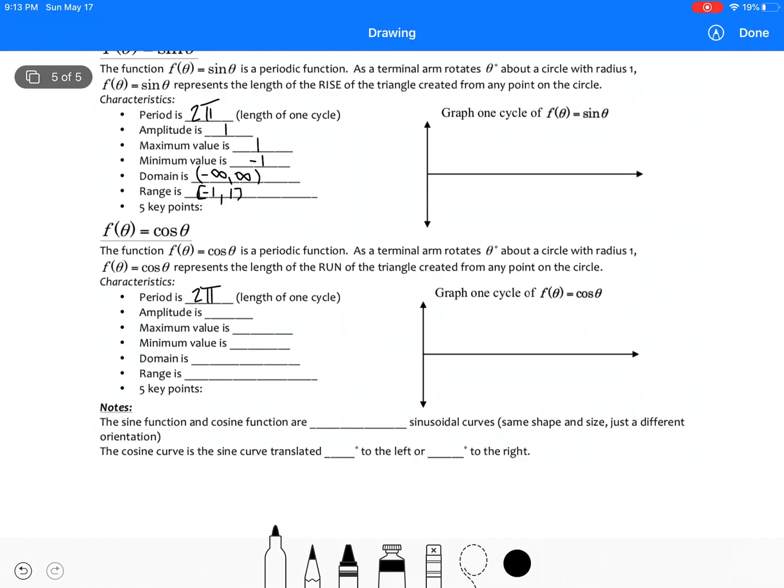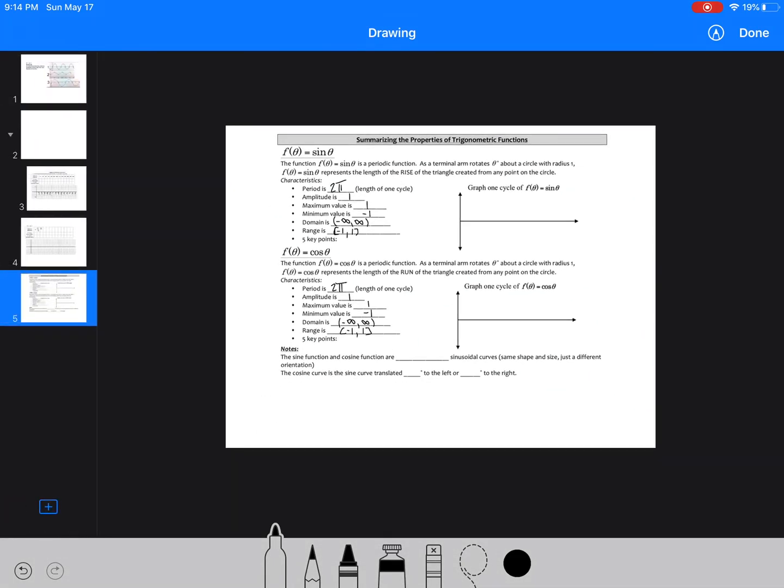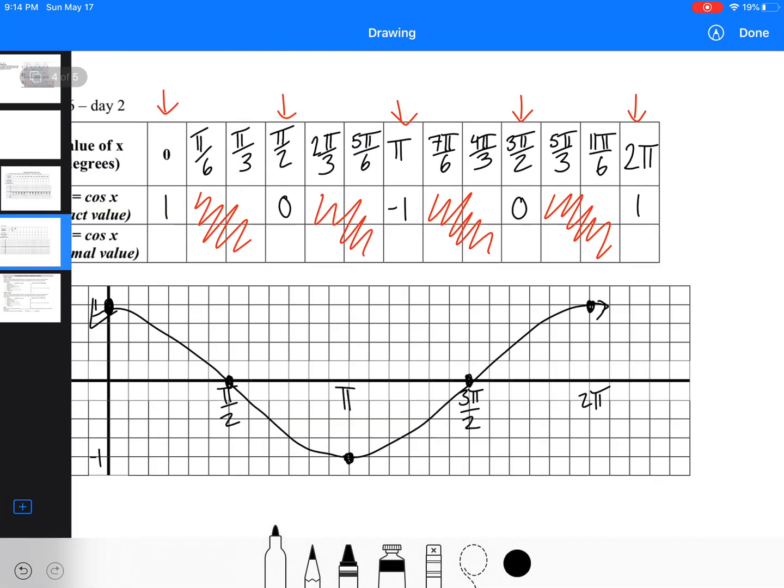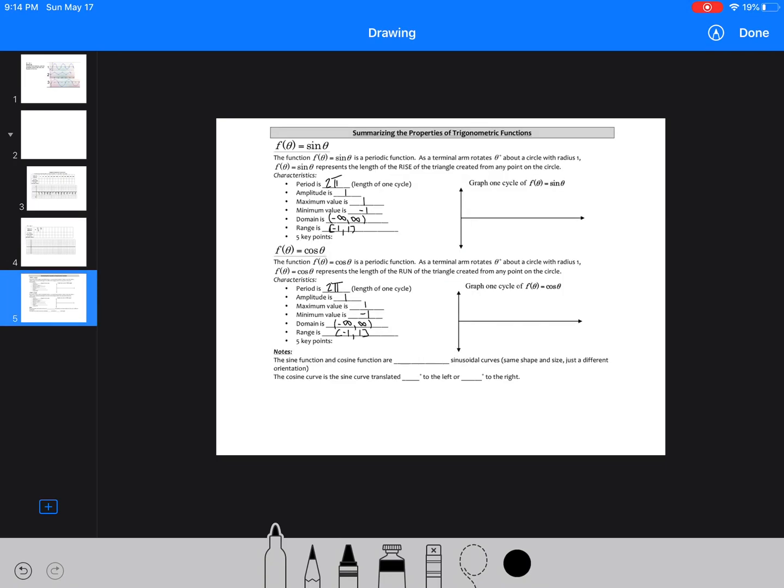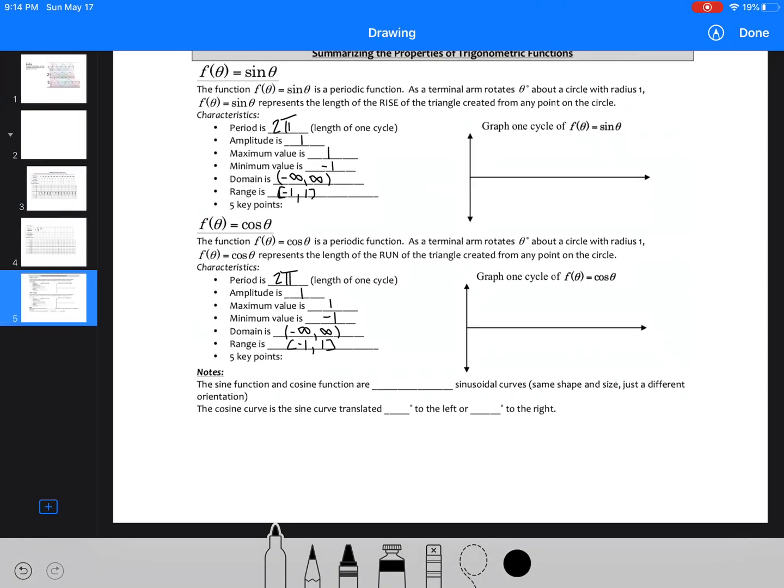Now period here is 2 pi again. Amplitude 1, max is 1, negative 1. Domain is the same. The range is the same. But what we notice is that our key points have all moved over. So our key points for the cos graph are 0, 1, pi by 2 and 0, pi and negative 1, 3 pi by 2 and 0, and 2 pi and 1. We've moved to the right. We've shifted this graph all the way to the right, pi by 2.